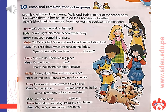Do we have any rice? Molly, look in the cupboard, please. No, we don't. We don't have any rice — let me write it down. We need some rice. How much curry powder do we have? We don't have much. Let me write it on the list. Curry. How many onions do we have? We don't have many. Only two.